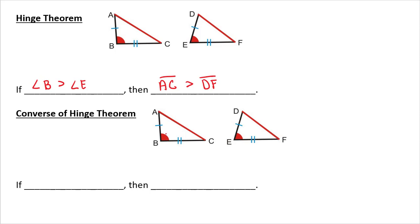Now the converse of that is you just switch the given and the proof, or the if and then. Then if AC is greater than DF, then angle B is greater than angle E.